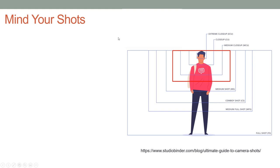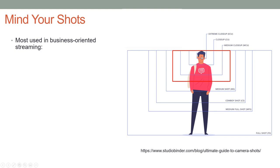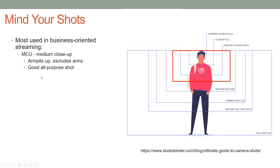Now let's look at the classic shots you'll use when shooting both live and on-demand video. I'm going to cover the ones that are most used in a business-oriented setting — you're probably not going to use a lot of extreme close-ups. MCU is medium close-up: this is armpits up and excludes the arms. It's a good all-purpose shot for any type of shoot, whether it's postage stamp or whether it's full screen. Medium shot is waist up.